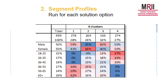We can profile segments to understand, for example, that we've got a segment here — segment two — which is predominantly female, and a segment here — segment four — which is predominantly younger people. But underlying that, we've got all of the category behaviours and the attitudes that we use to drive the segmentation.